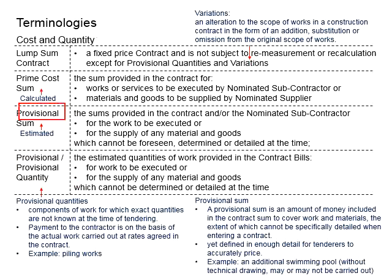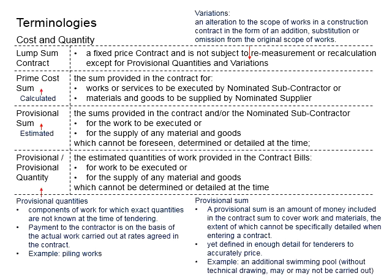Both of them are provisional in nature, meaning they are not clearly specified or not able to be detailed when entering a contract. Another main difference between the provisional sum and the provisional quantity is that for provisional quantity, we know the work must be carried out — it is just that we do not know the quantity at that moment. It is still predictable as long as we give a rate as agreed between the contractor and the employer, and the cost can still be quantified.